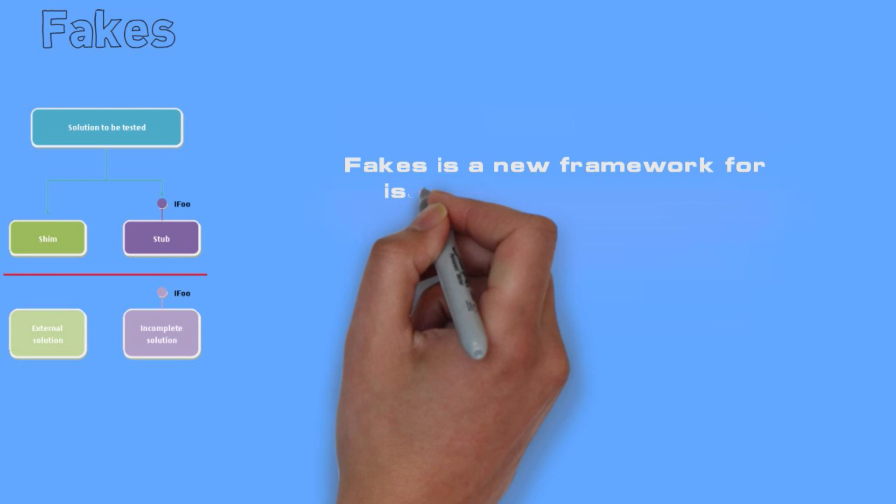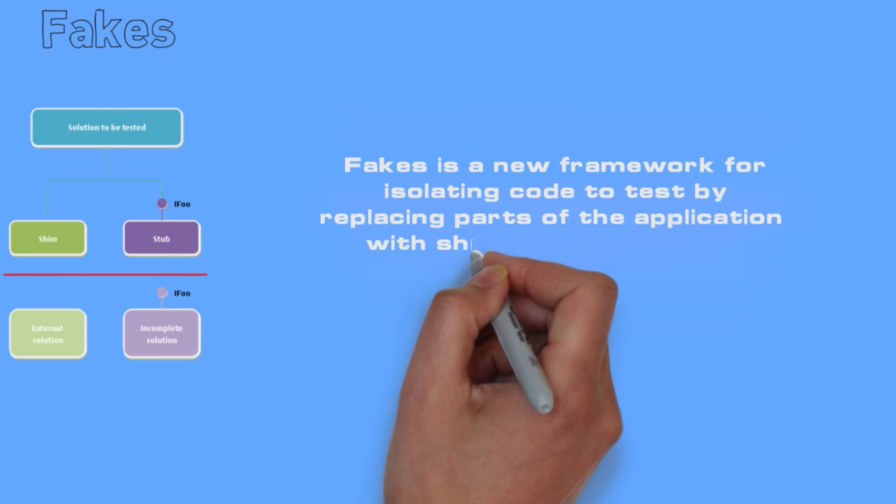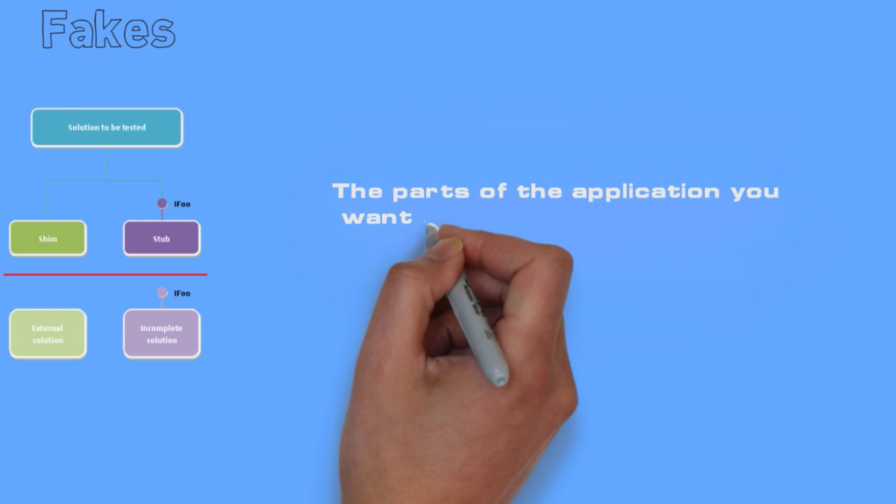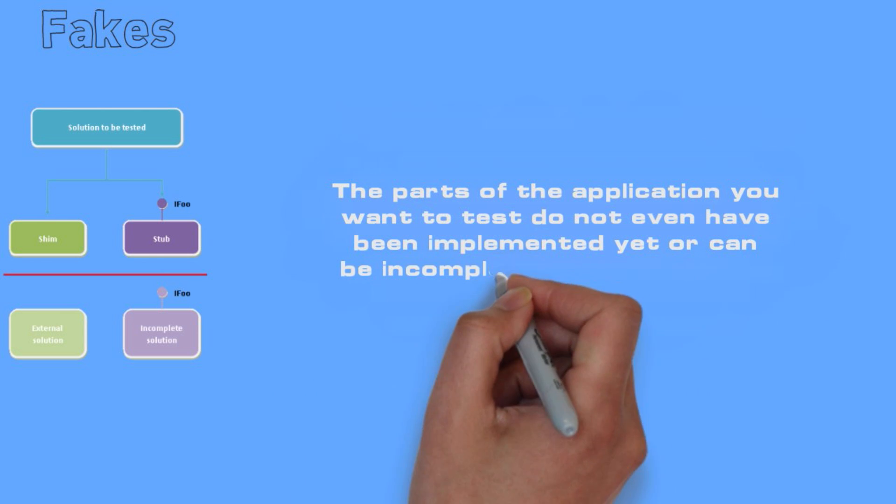Fakes is a new framework for isolating code to test by replacing parts of the application with shims and stubs that execute in place of the original code. The parts of the application you want to test do not even have to be implemented yet or can be incomplete and not working.